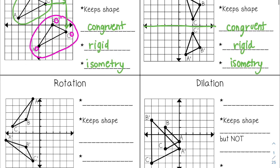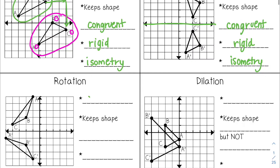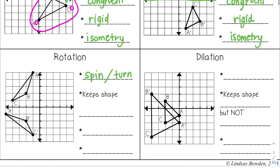The next type is a rotation, or a spin or turn. It will also keep the shape congruent, which means it is a rigid transformation and an isometry. It doesn't change the size of the shape, it just changes where it is. We will get into rotation soon, but this is a 90 degree counterclockwise rotation.